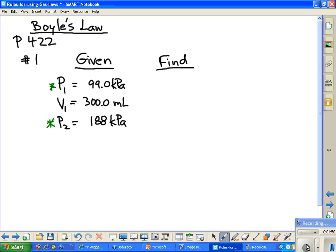Okay, the find is, according to this, it says what will the new volume be? The new volume is going to be volume 2, and that's what we're asked to find. So we're going to put out Boyle's Law: P₁V₁ equals P₂V₂.